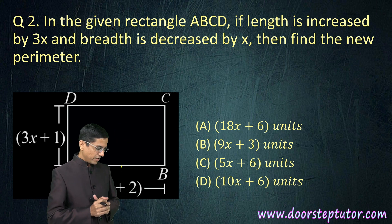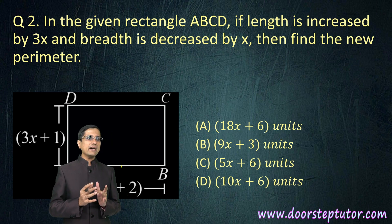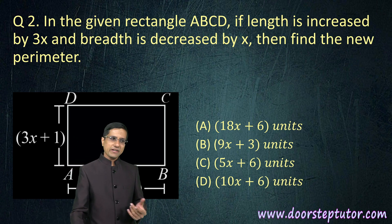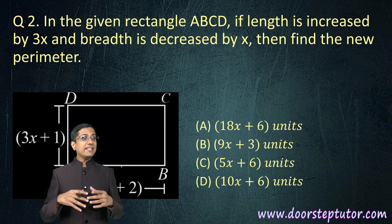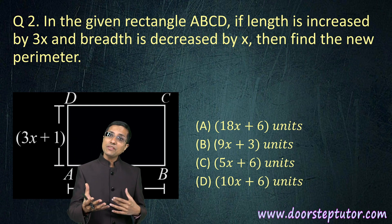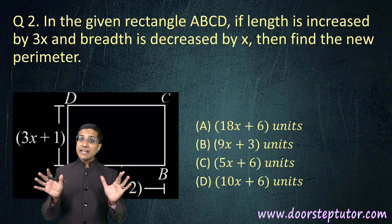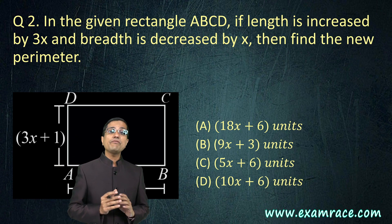Now here we are given a rectangle ABCD. The question asks us if the length is increased by 3x, and the breadth is decreased by x, then find the new perimeter.